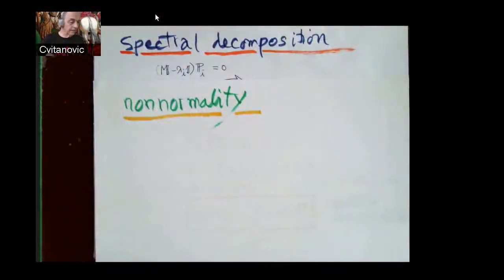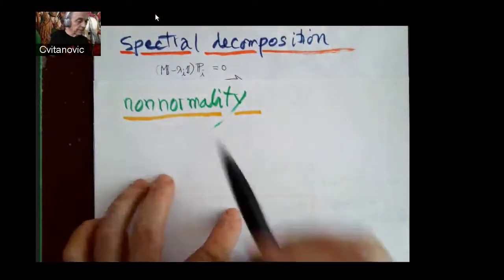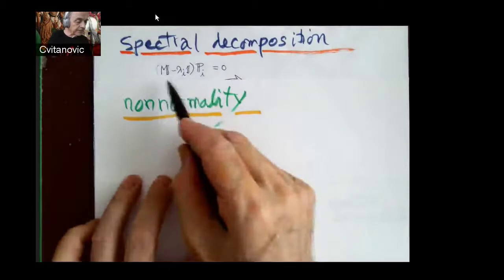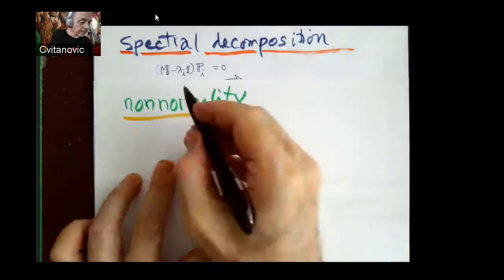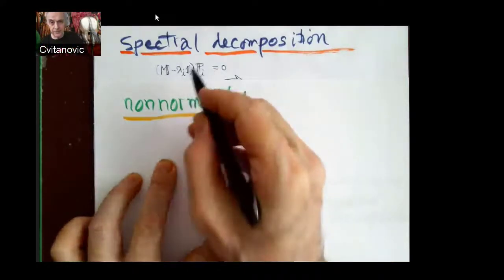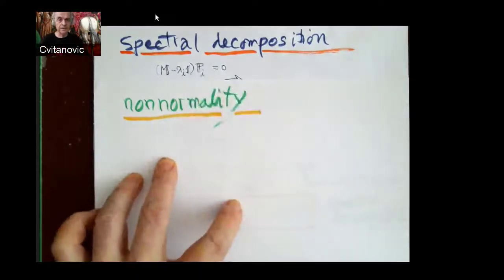Look again at the Hamilton-Cayley formula, written as the i-th term in a product of our eigenvalues times the remainder, which we call projection operator when it's correctly normalized.